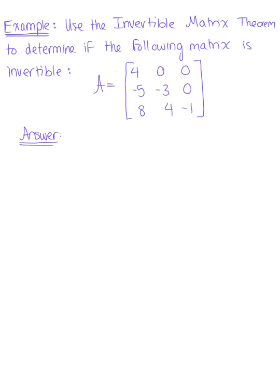So here we have matrix A defined by the column vectors 4, -5, 8; 0, -3, 4; and 0, 0, -1.